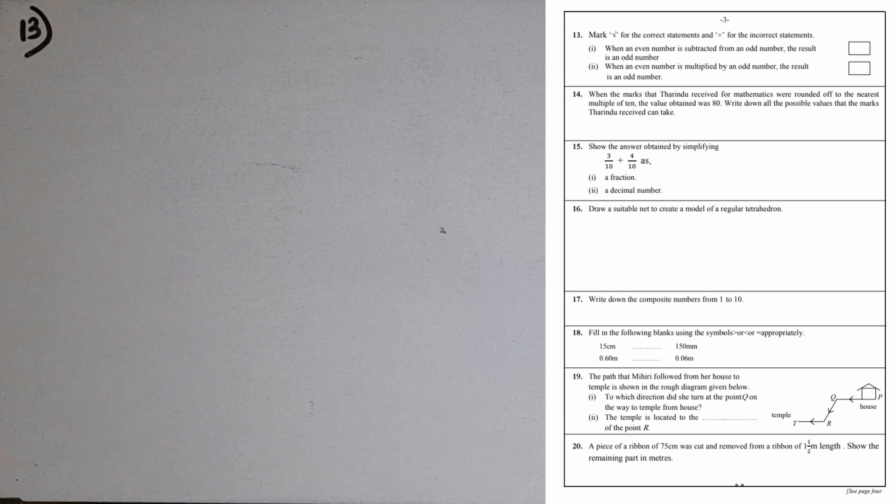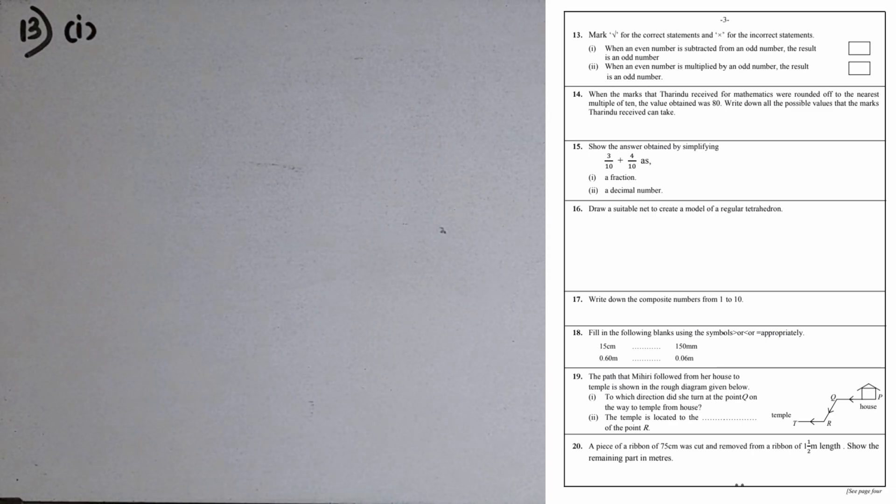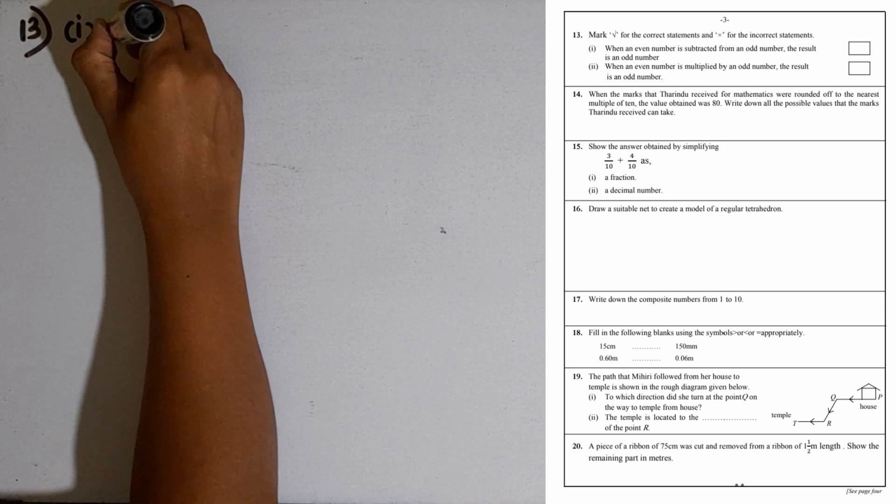Question number 13: Mark a tick for the correct statements and cross for the incorrect statements. Part 1: When an even number is subtracted from an odd number, the result is an odd number. Let's take even number 6 and odd number 3. 6 minus 3 is 3, that is also an odd number. So first one is correct.